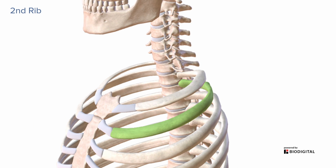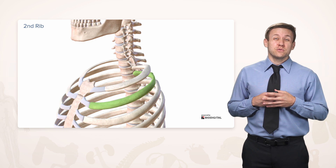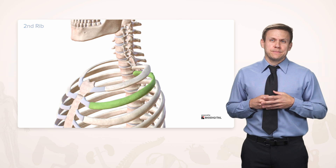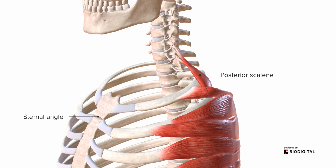The second rib is also important because it's a useful landmark — it's where the sternal angle is located and can be palpated. It's good to know where your second rib is because you usually can't palpate the first rib, as it's hidden by the clavicle. The sternal angle is what you're looking for when numbering ribs — really rib number two, not rib number one. The second rib is still close to the neck and has an attachment for the posterior scalene, although it's usually obscured by the serratus anterior muscles.